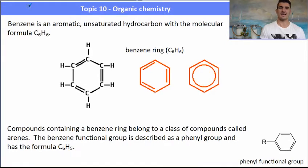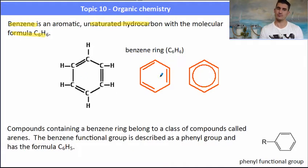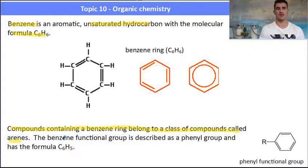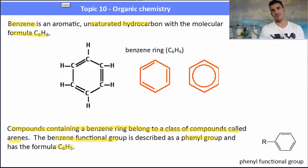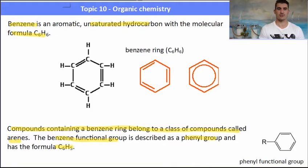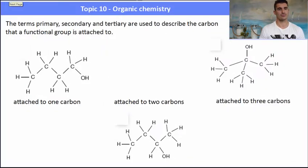Benzene is described as an aromatic unsaturated hydrocarbon with the molecular formula C6H6. It's a ring structure with two double bonds that are delocalised, and there are three representations for a benzene ring. If you are a derivative of a benzene ring, you belong to a class of compounds known as arenes. If we have a functional group that is a benzene group, it's described as a phenyl group.